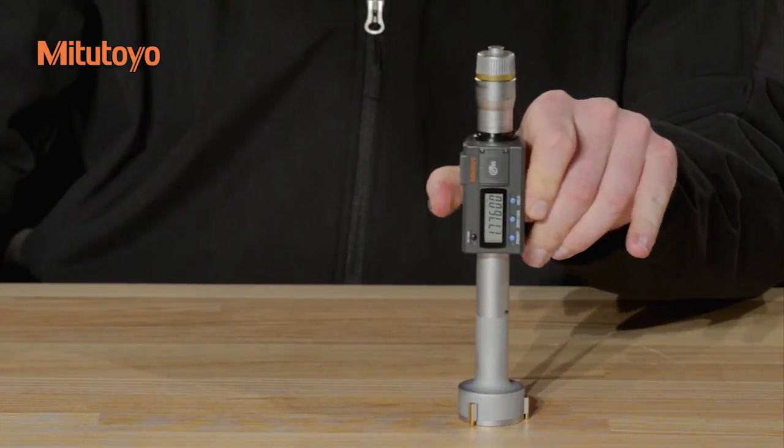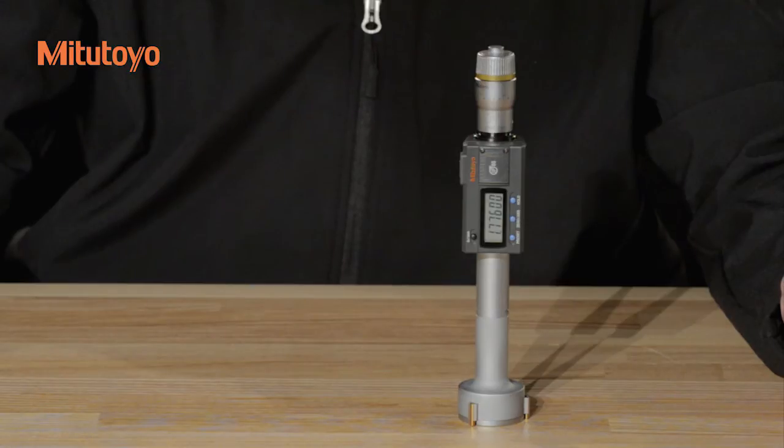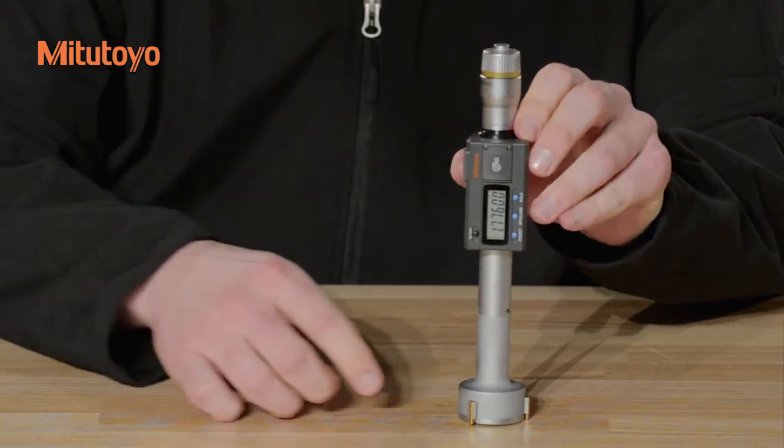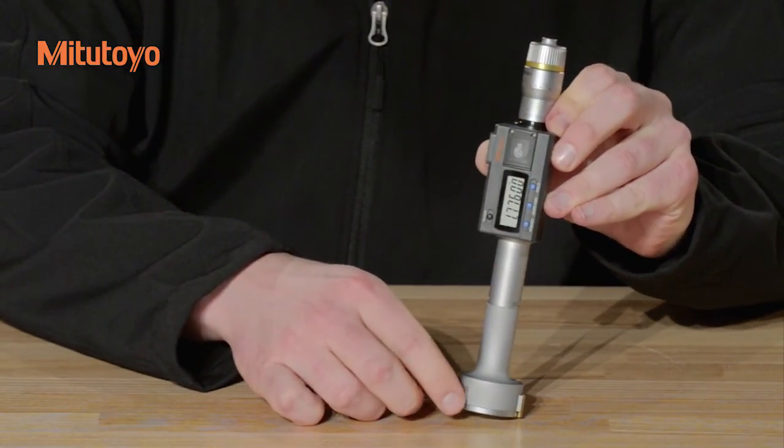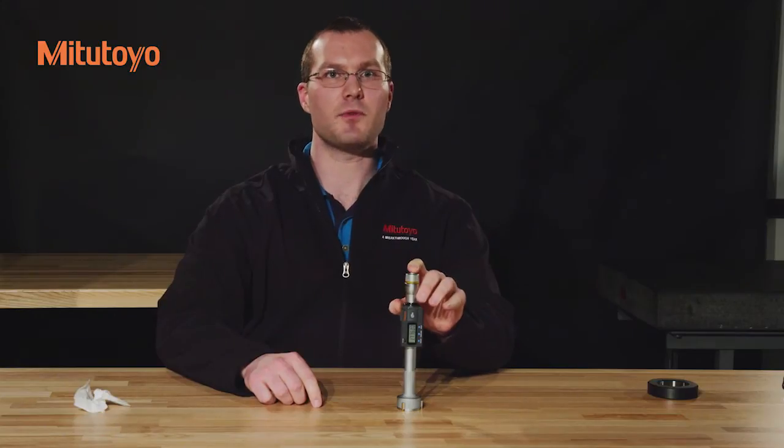Make sure you store the instrument in a room free from excessive heat, moisture, dust, and oil mist. And if storing the instrument for an extended period of time, apply micrometer oil to the anvils and contact surfaces. Lastly, remove the battery.